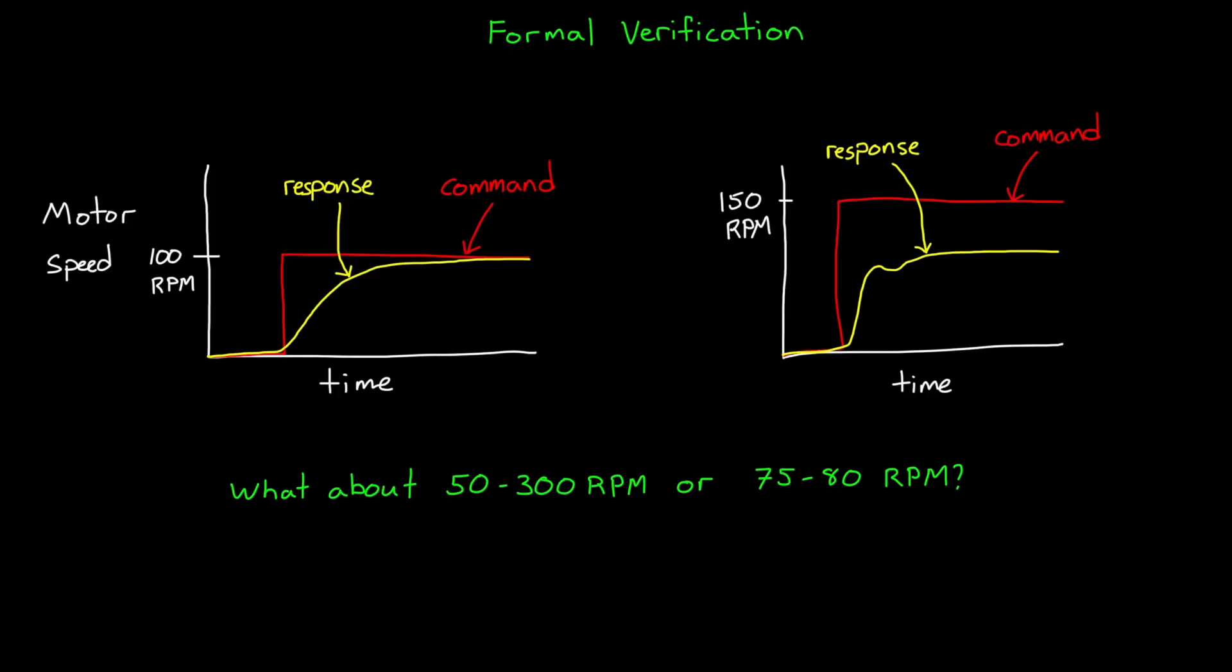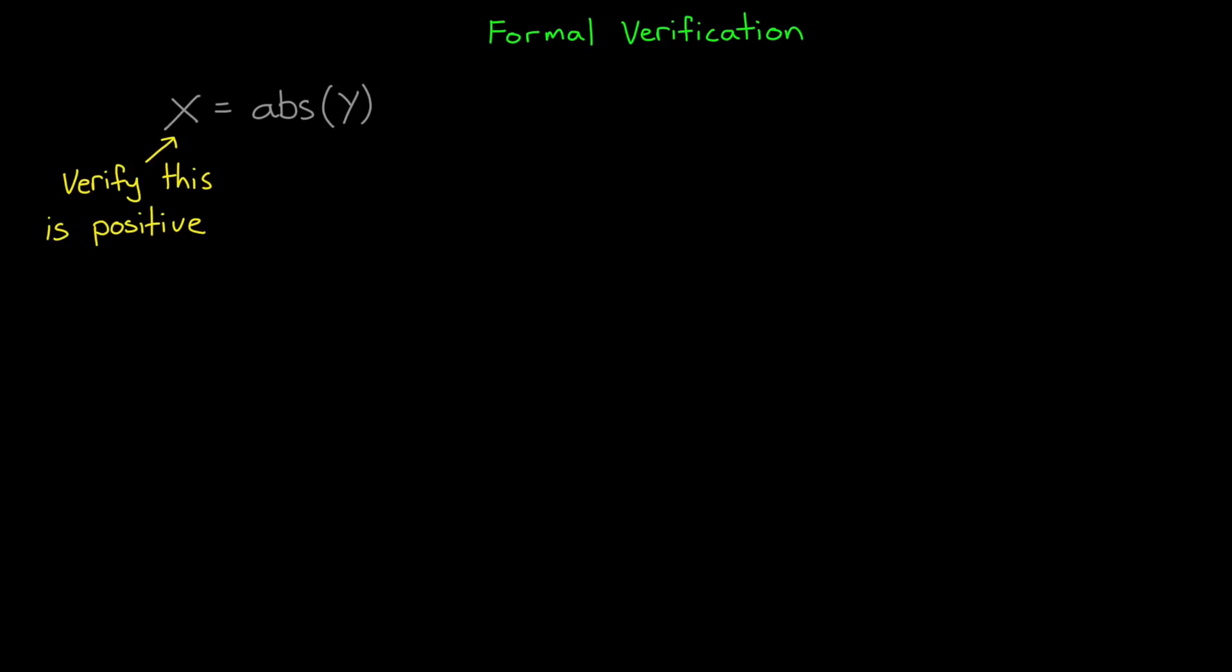For example, we don't have to test to make sure a signal will always be positive if the absolute value of that signal is performed in the software. We can verify it simply by inspecting the code and showing that the condition will always be met. Other types of formal verification include calculating robustness and stability factors like gain and phase margins.